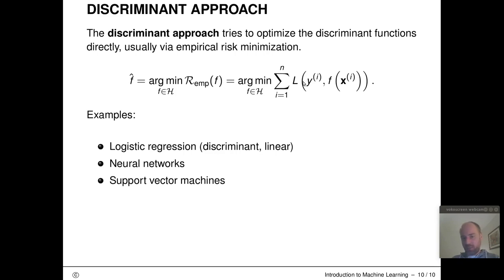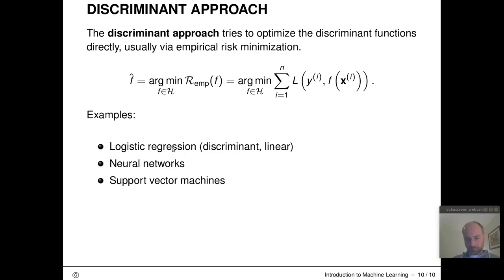This discriminant approach works in a very similar manner to regression — we just need to pick different loss functions because of the discrete nature of our labels. Examples of the discriminant approach to classification include logistic regression as our most fundamental example, as well as neural networks, support vector machines, and many other techniques.